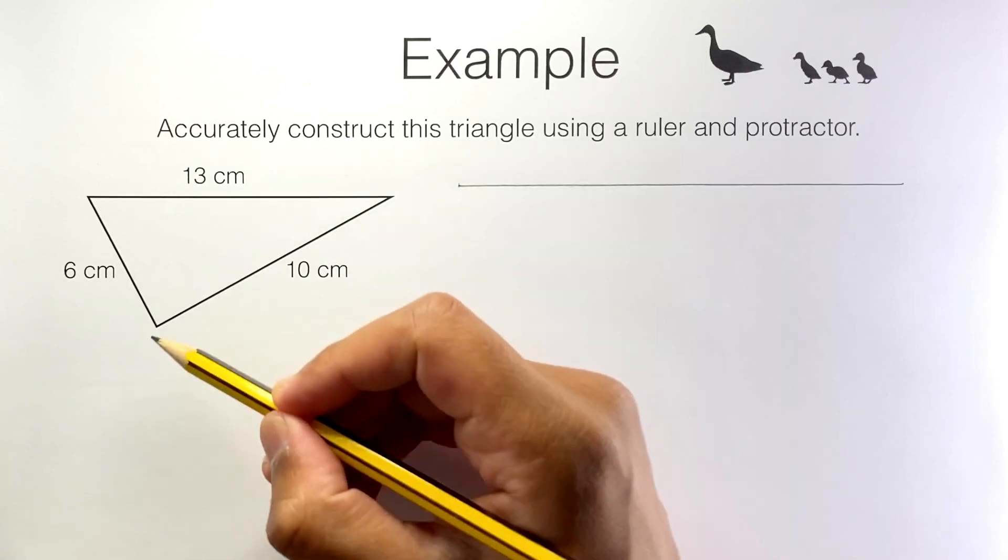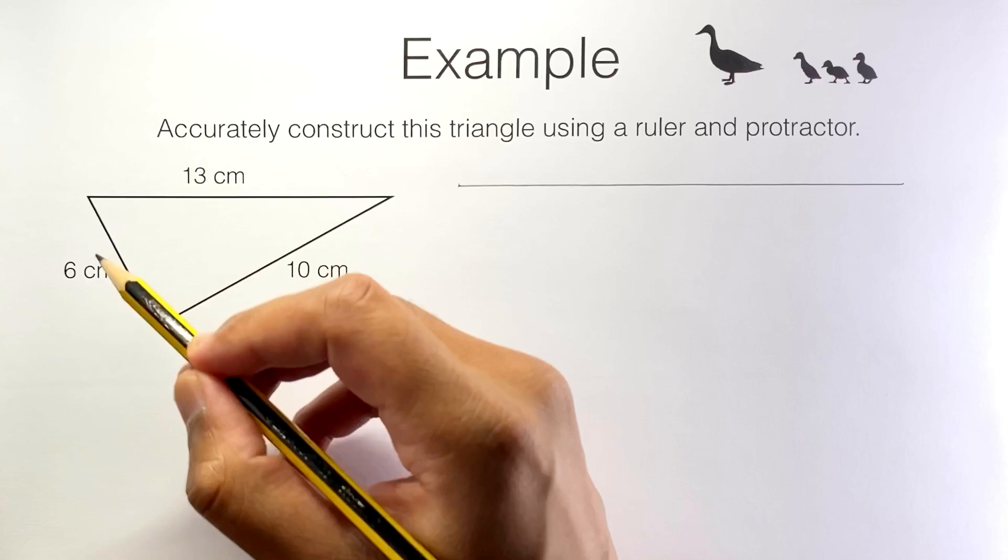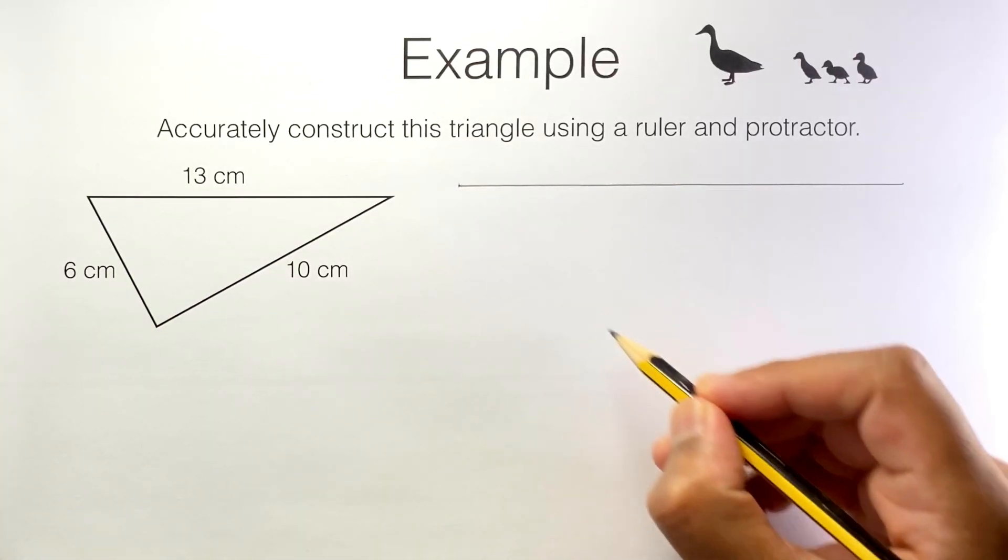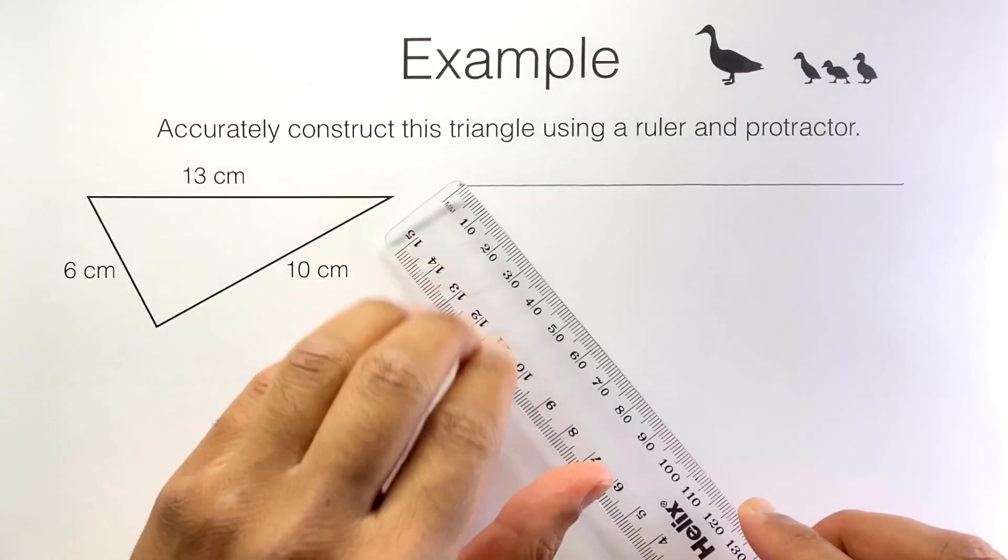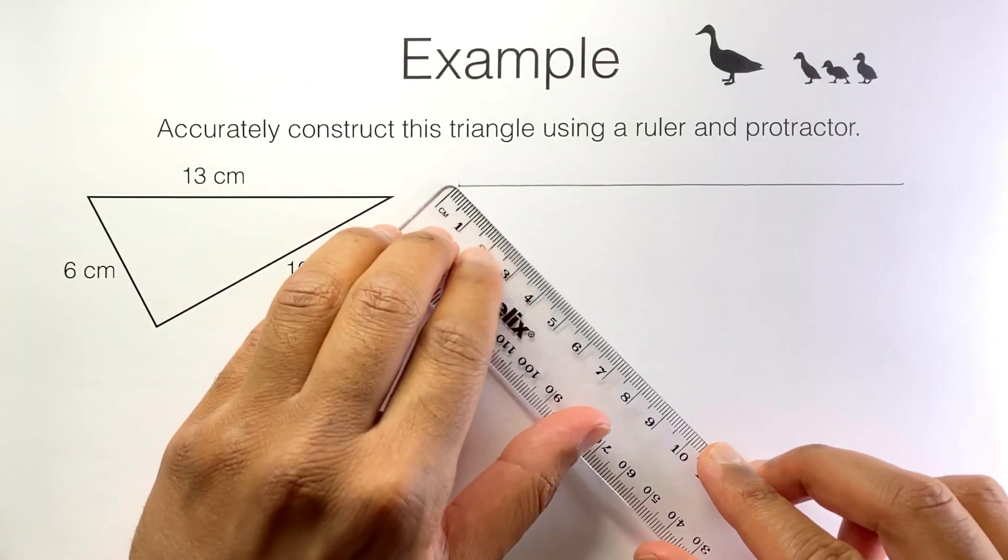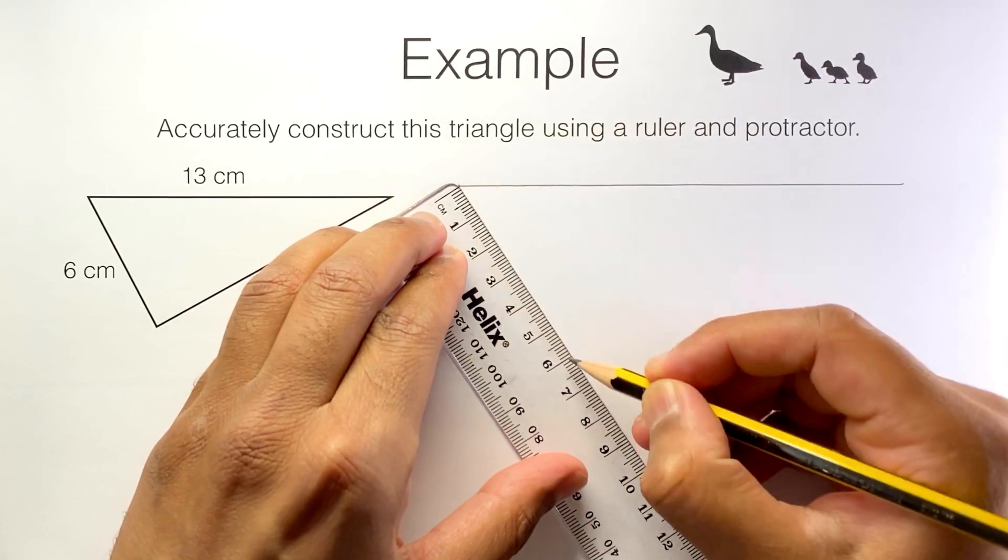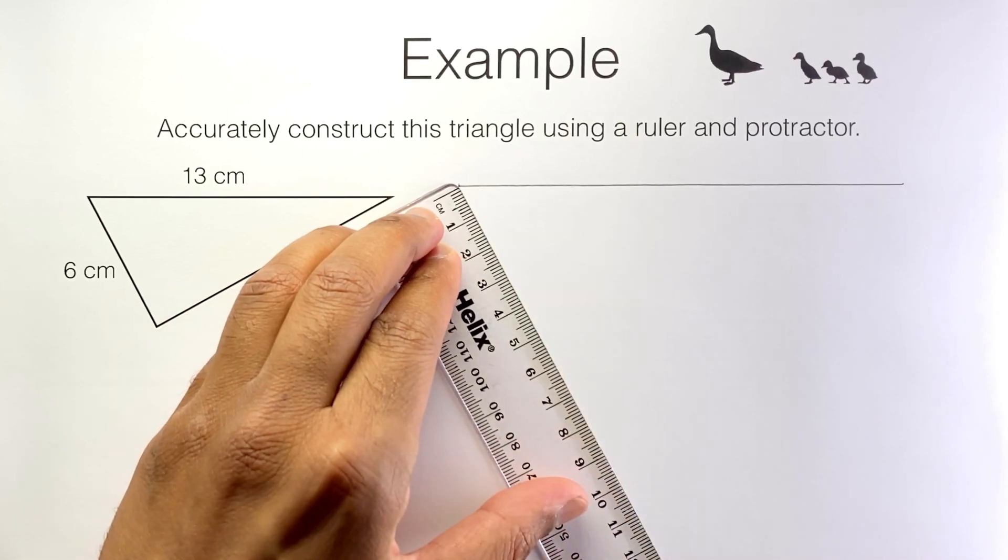Now we know the third vertex needs to be six centimeters from this end of that side, so six centimeters from here. But I can't just grab a ruler and measure out six centimeters. I don't know what angle to measure at. For example, do I measure out six centimeters in this direction, or six centimeters in this direction, or in this direction? We just don't know.